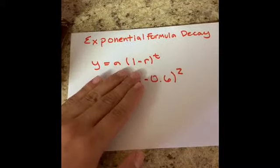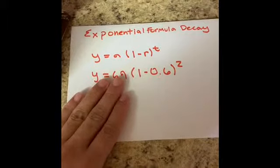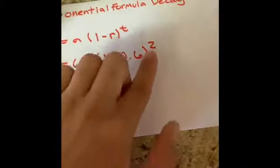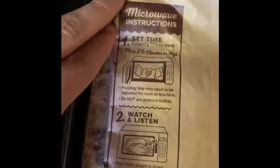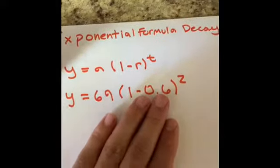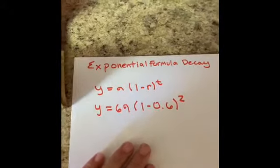The exponential formula for decay is y equals a times parenthesis 1 minus r times t. A stands for the initial amount. The initial amount for popcorn is around 69 grams. It should take around 2 minutes, which is t. The rate, which is r, is 0.6. Now we can find out how much weight I lose when I pop my unpopped popcorn.